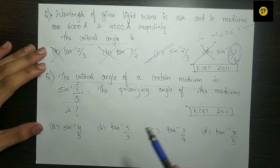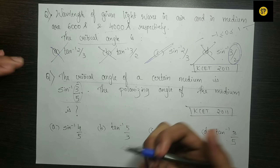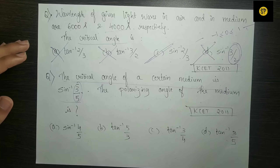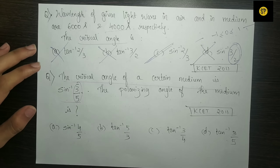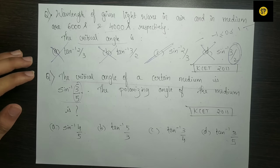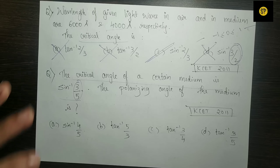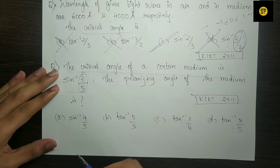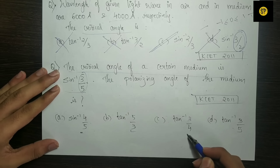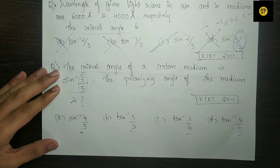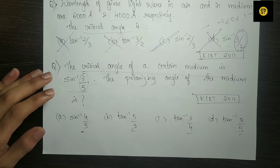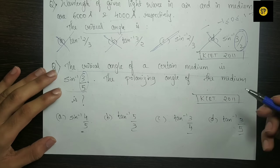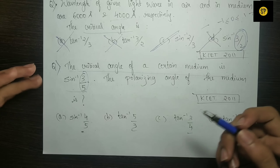The critical angle of a certain medium is sine inverse 3/5. We are asked to find the polarizing angle of the medium. The options include sine inverse 4/5, 5/3, 3/4, and 3/5. Using Brewster's law, the polarizing angle is related to the refractive index derived from the critical angle.